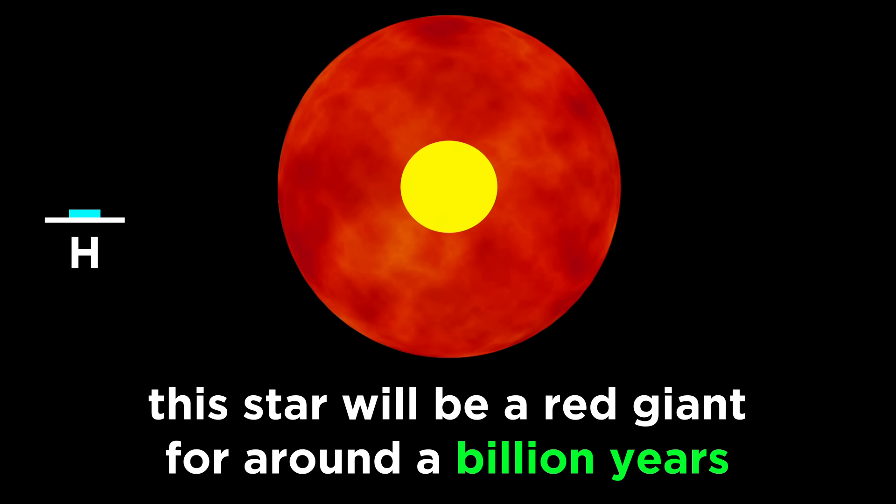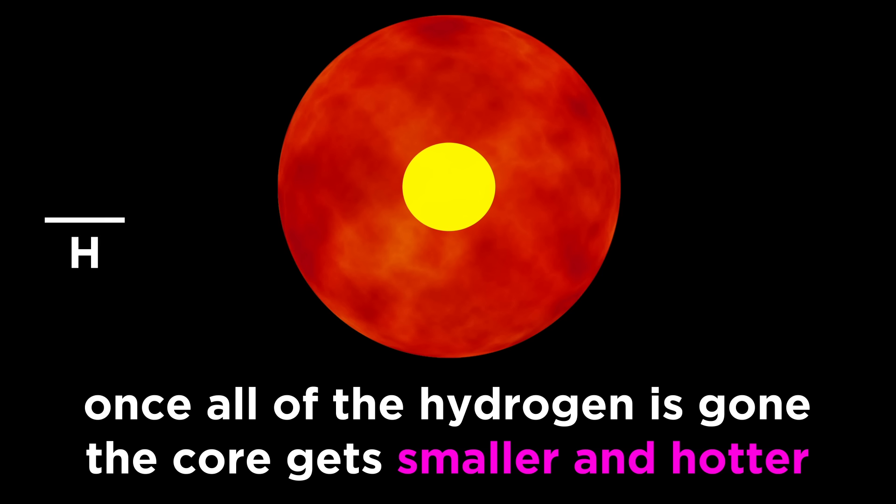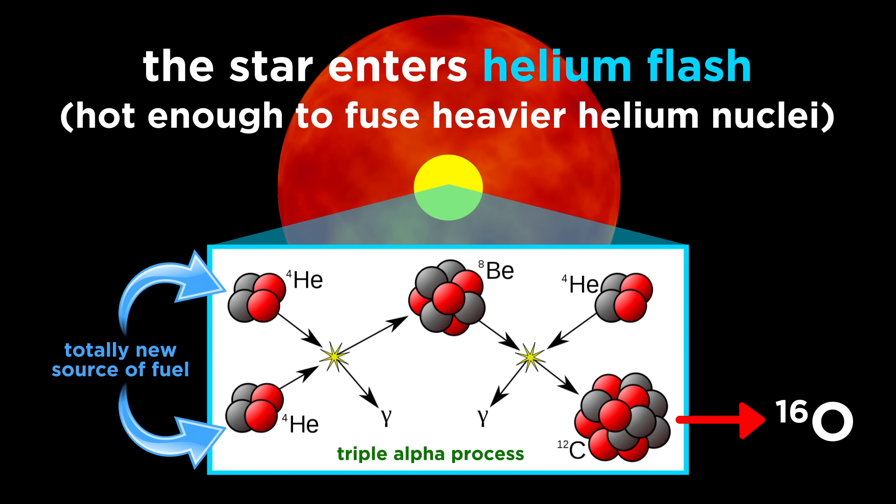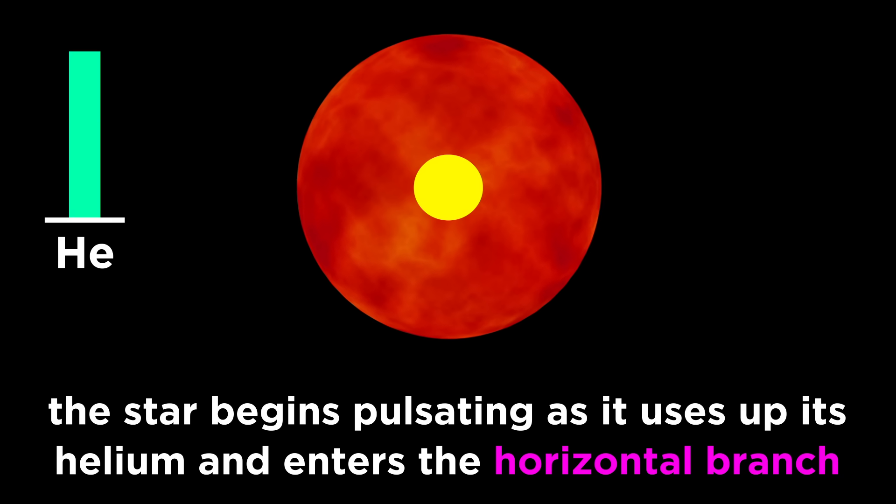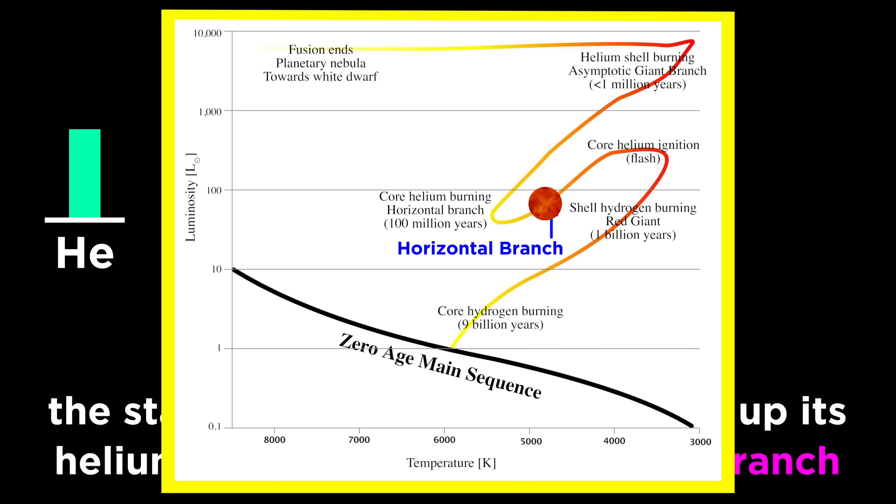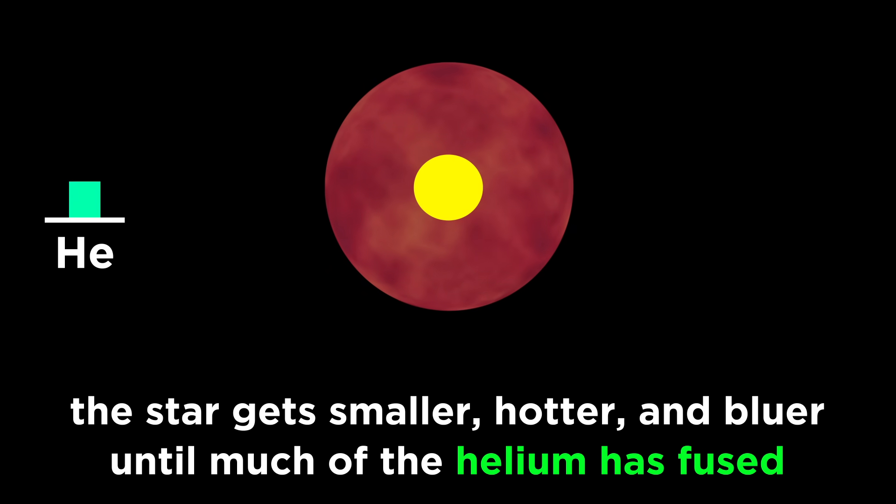The star can maintain this new status for a little while longer, around a billion years, but after almost all the hydrogen is gone, the core gets even smaller and even hotter. At this stage, a phase called helium flash, things are so hot that the star is able to fuse these heavier helium nuclei into larger nuclei, like carbon, and then oxygen, through something called the triple alpha process, and this means that the star has a whole new source of fuel in all the helium it has been making for billions of years. The star begins pulsating as it runs through its final energy reserve, entering what we call the horizontal branch, and in this time it becomes smaller, hotter, and bluer.